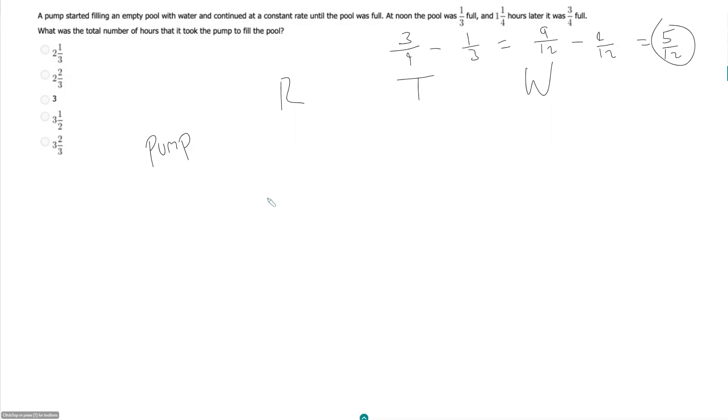So that's going to be a lot of fraction arithmetic, which is fine—you should be comfortable with that. So our rate is, we can fill five-twelfths of a pool every 1.25 hours.